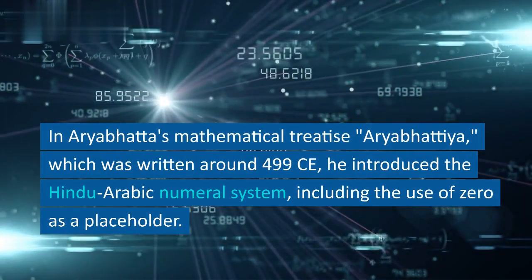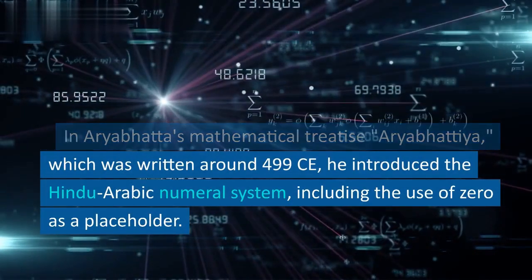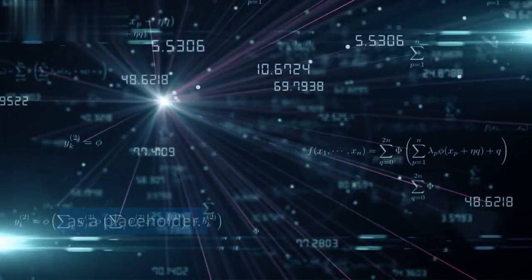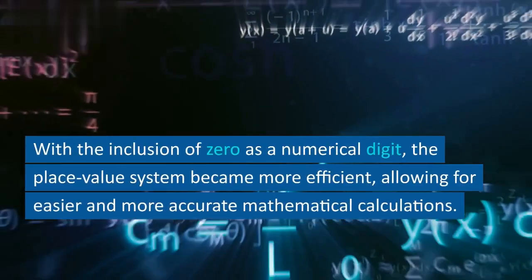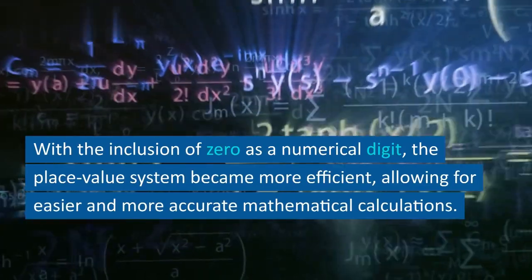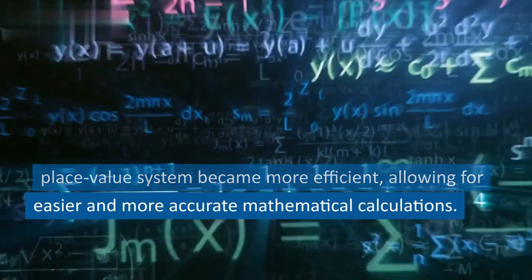In Aryabhata's mathematical treatise Aryabhattiya, which was written around 499 CE, he introduced the Hindu-Arabic numeral system, including the use of zero as a placeholder. With the inclusion of zero as a numerical digit, the place-value system became more efficient, allowing for easier and more accurate mathematical calculations.